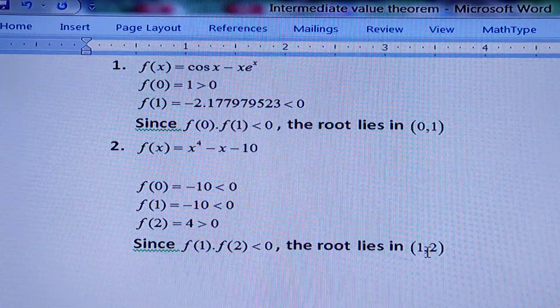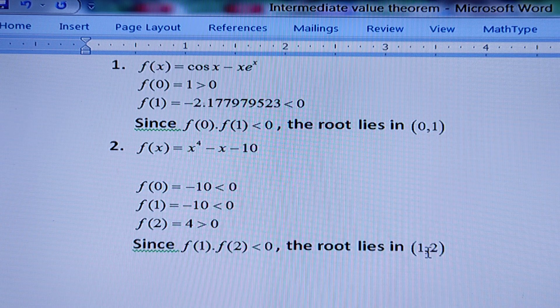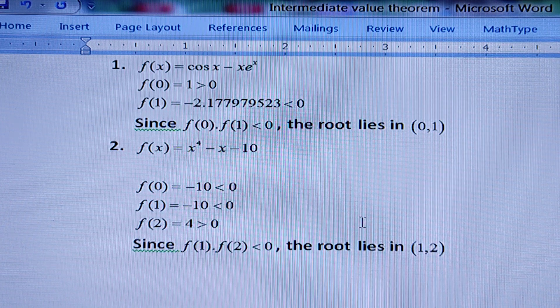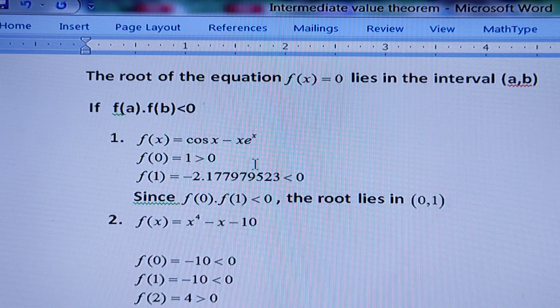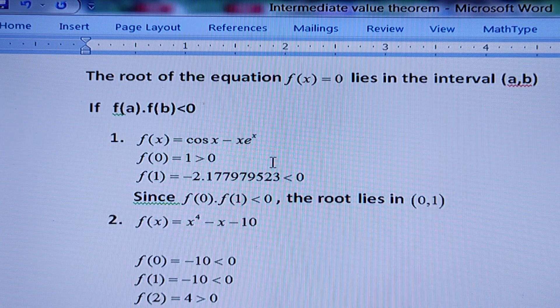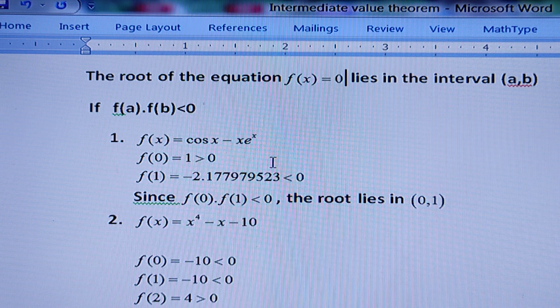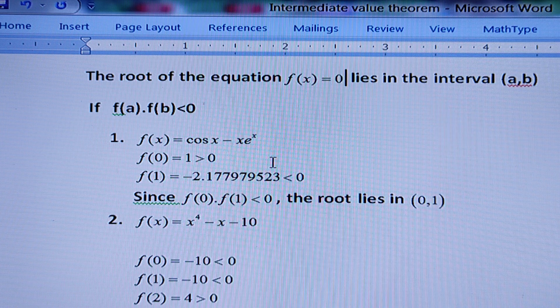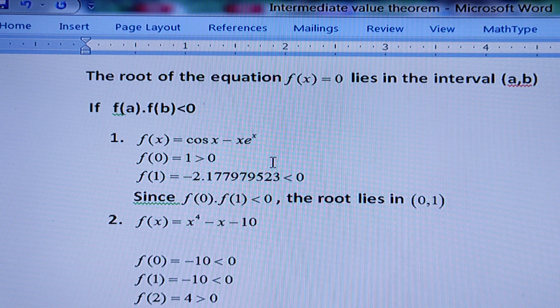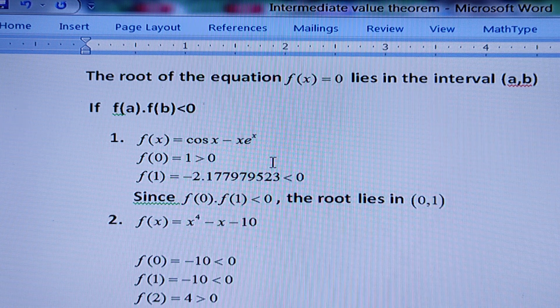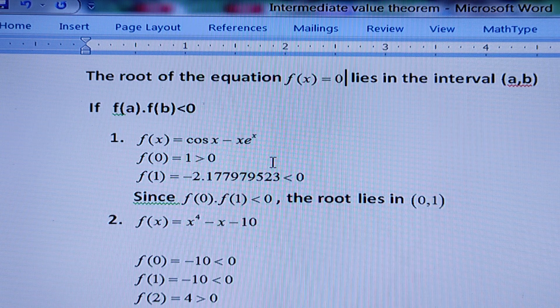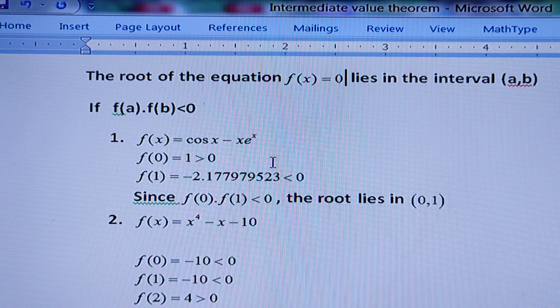So this is all about the Intermediate Value Theorem and how to find out the interval in which the root lies. Remember, a very important point: for trigonometric functions, you should always apply radian mode, not degree mode. If you apply degree mode, the answer will be wrong. If there is any doubt, please ask me in the comment box. Thank you.